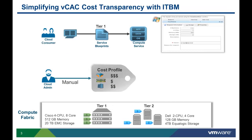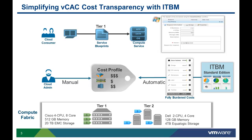VCAC provides cost transparency throughout the product, so users can see the costs of compute resources and the services they're requesting. There are two different ways to assign costs to compute resources within VCAC. Cost profiles can be manually created and manually assigned to each compute resource, or costs can be automatically provided through the VCAC integration with ITBM Standard Edition. In that case, ITBM automatically provides the compute resource costs for all vSphere resources defined in VCAC and managed by ITBM.